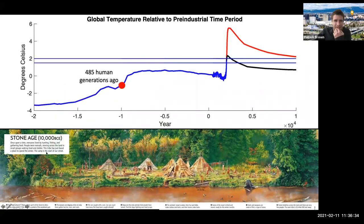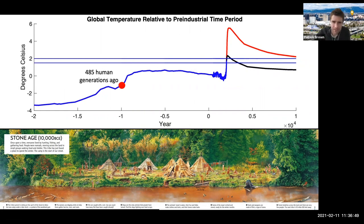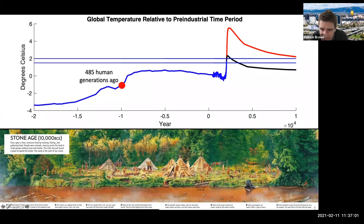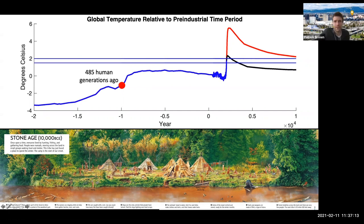This is how the scene starts: 10,000 BCE — 485 human generations ago. This is hunter-gatherer society in Europe at that time. They had animal-hide tents, here's someone making a canoe, dogs were starting to be domesticated, someone curing meats, and you have religion. This is 10,000 BCE — 485 human generations ago — you can kind of picture yourself living in this society. It's not some different species.